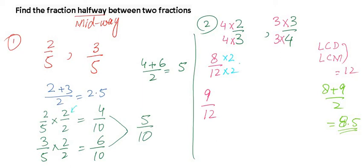Multiply up and down by 2, it becomes 16 out of 24. And here if you multiply up and down by 2, you will get 18 out of 24.